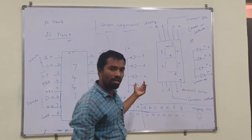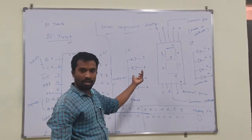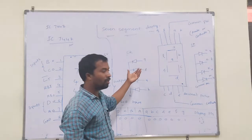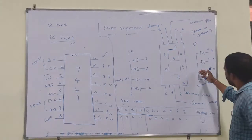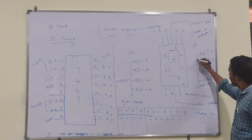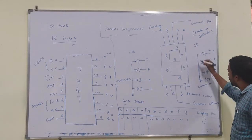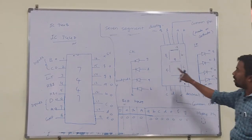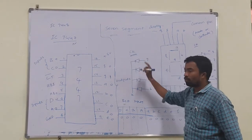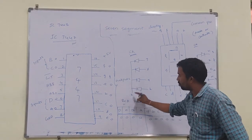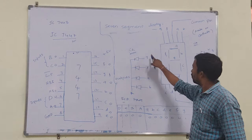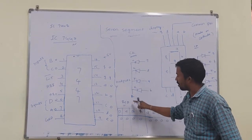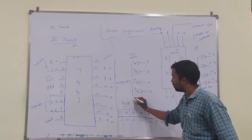There are two types of seven segment displays: common anode and common cathode. The internal structure of the common anode has all the anodes connected together and taken as a single common pin. For common cathode, all the cathodes are short-circuited and taken as a common pin.